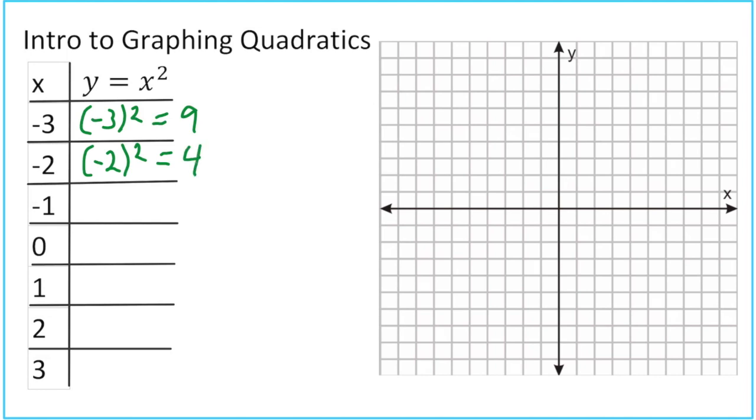I'm going to stop showing the work and just go straight to the answer so you can see what's happening. Negative 1 times negative 1 is 1, 0 squared is 0, 1 squared is 1, 2 squared is 4, and 3 squared is 9.